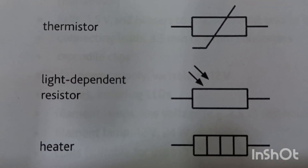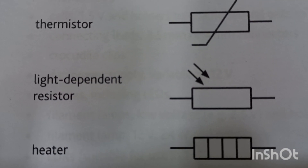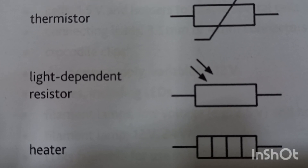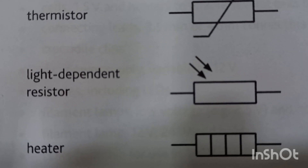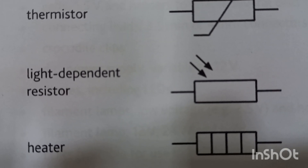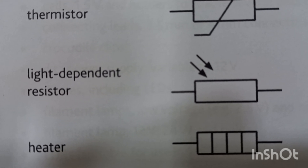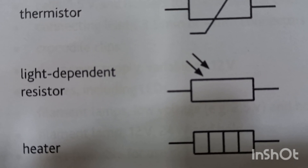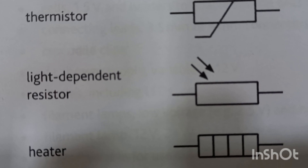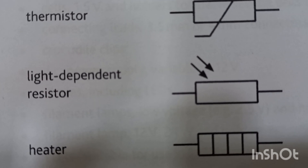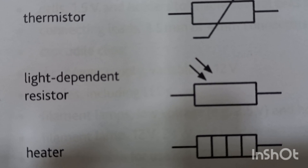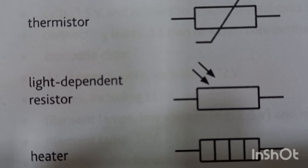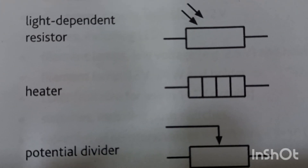This is a light dependent resistor (LDR). An LDR is a resistor whose resistance depends upon the intensity of light. If the light becomes brighter, the resistance will become less. If the brightness of the light decreases, the resistance of the LDR will increase.